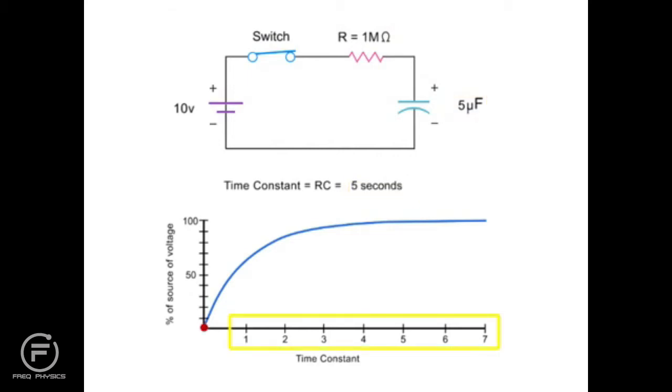Therefore, for each 5 seconds of elapsed time, the capacitor will achieve its corresponding voltage percentage until it reaches an effective charge after five time constants.